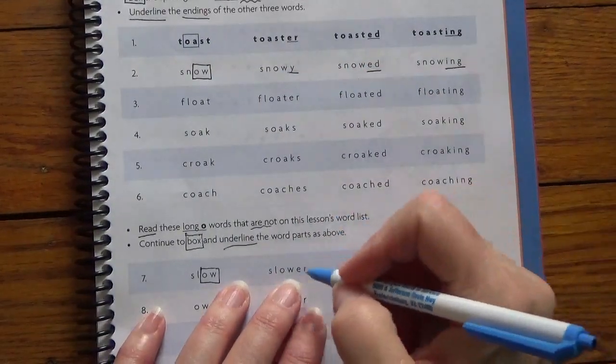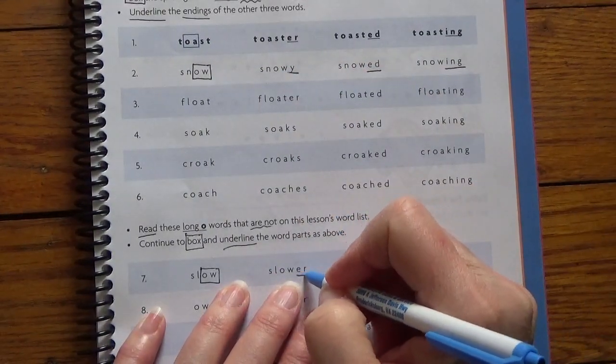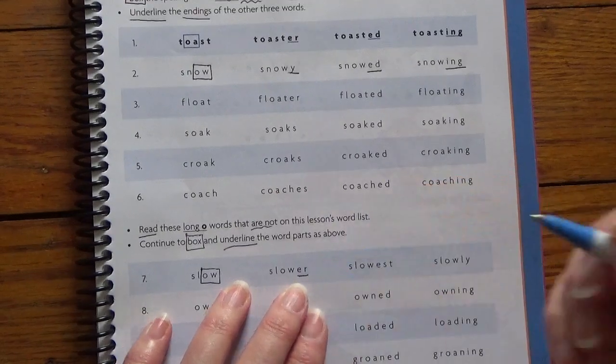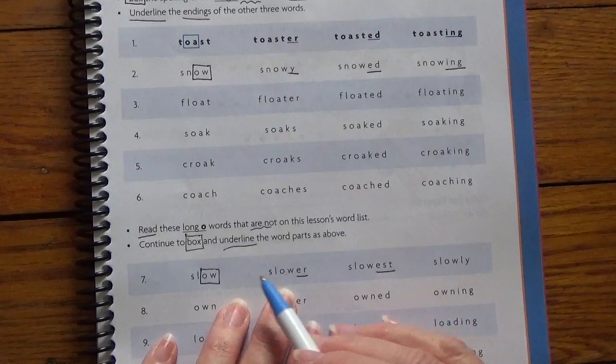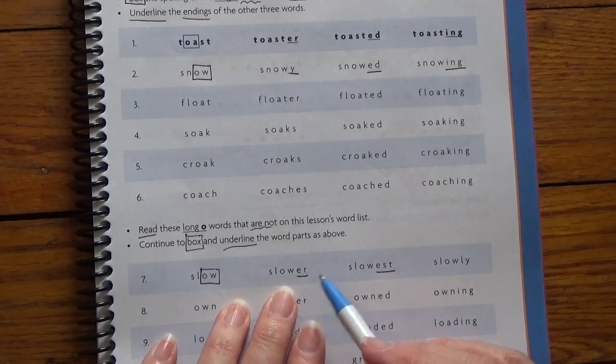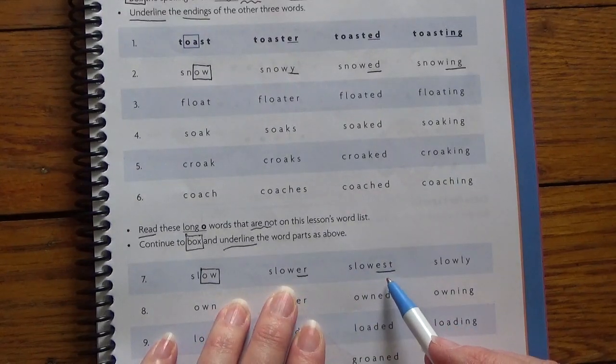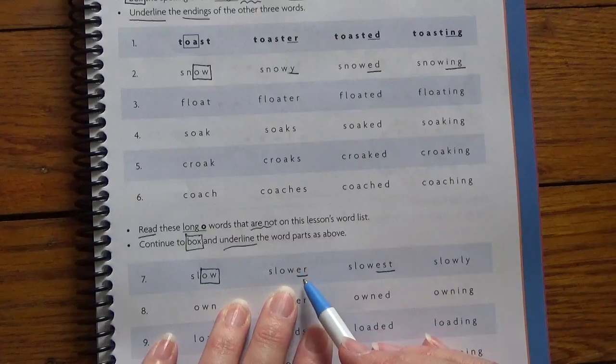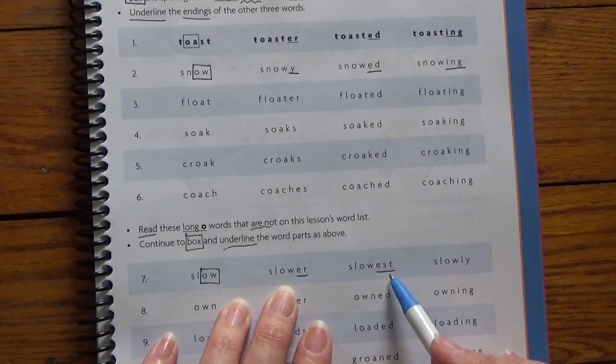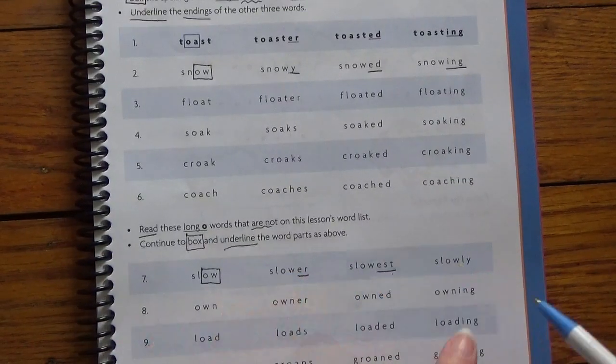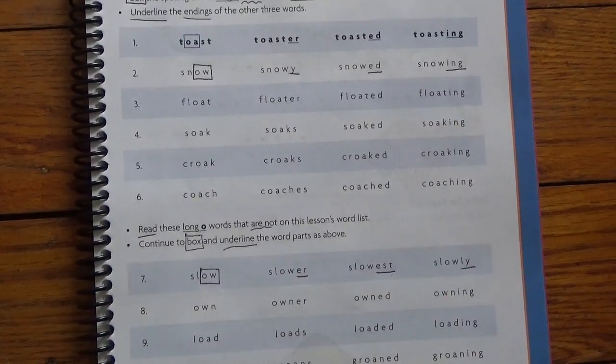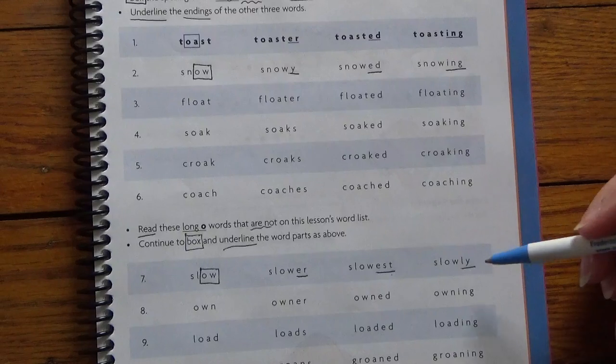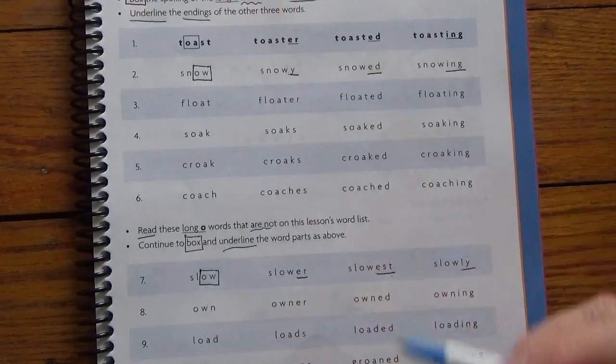And I'm going to underline the suffix. Slower, so the E-R. Slowest. More than... He was slow, he was slower, he's the slowest. So slow, more than slow, the most slow you can be. And he walked slowly through the snow, enjoying his time. Alright, so that's what you're going to do here.